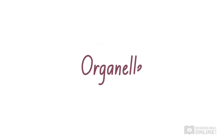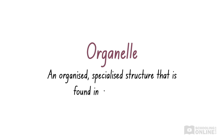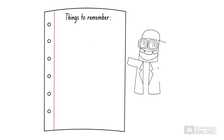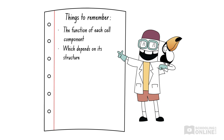Remember, an organelle is an organised, specialised structure that is found in a eukaryotic cell. Some organelles are bound by one or more membranes. In this second lesson on animal cells, we'll continue to explore the structure and function of animal cell components. During the HSC biology course, you'll learn that these components cooperate to keep the animal cell alive.